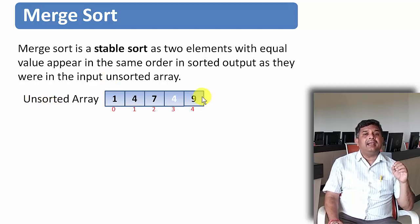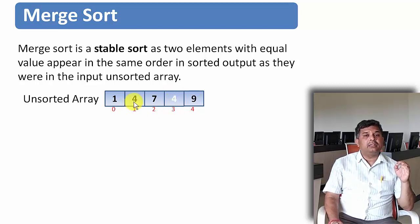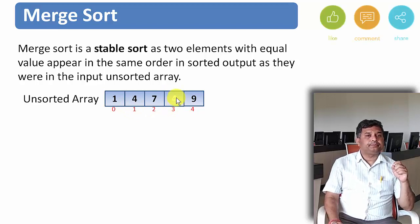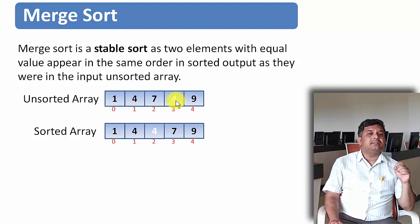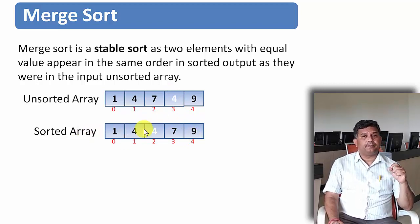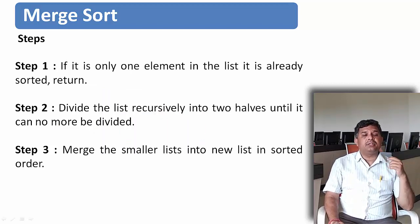For example, consider an unsorted array with two fours. To indicate they are the same value but at different locations, one is marked in black and another in white. After sorting, the first four (black) appears first and the second four (white) appears second — the relative order is preserved. This type of sorted output is called a stable sort, and merge sort is a stable sort.